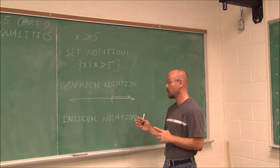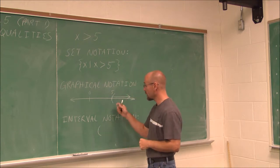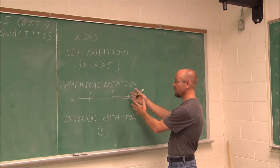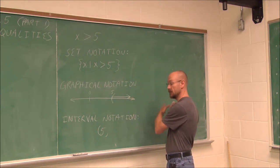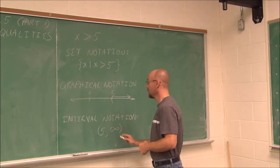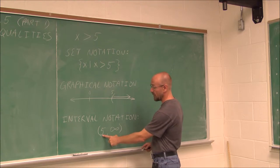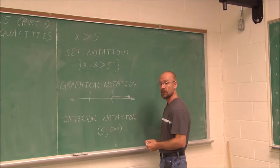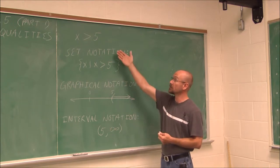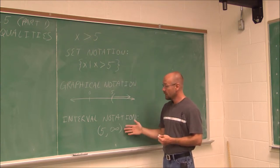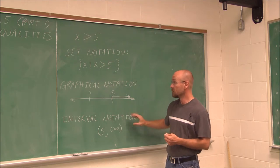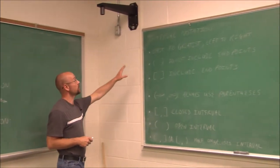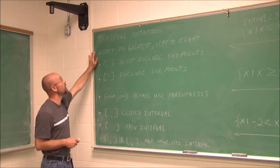Then we have interval notation. I use that same parentheses, and this number line with my arrow — any value greater than 5 would continue on to positive infinity. So interval notation says the values I'm looking at go from 5 to infinity, any value greater than 5. All three different ways to represent x greater than 5 are written like this. Let's look at some of the main points we have to understand for interval notation.